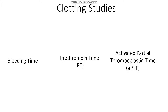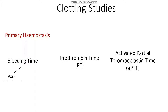If we have an issue with our clotting, one or multiple of these times is going to be raised because we're taking longer to clot. Bleeding time refers to any disease of primary haemostasis. We know that primary haemostasis involves von Willebrand factor and platelets. Thus, if we have a disease of von Willebrand factor or platelets, we're going to see an increased bleeding time.